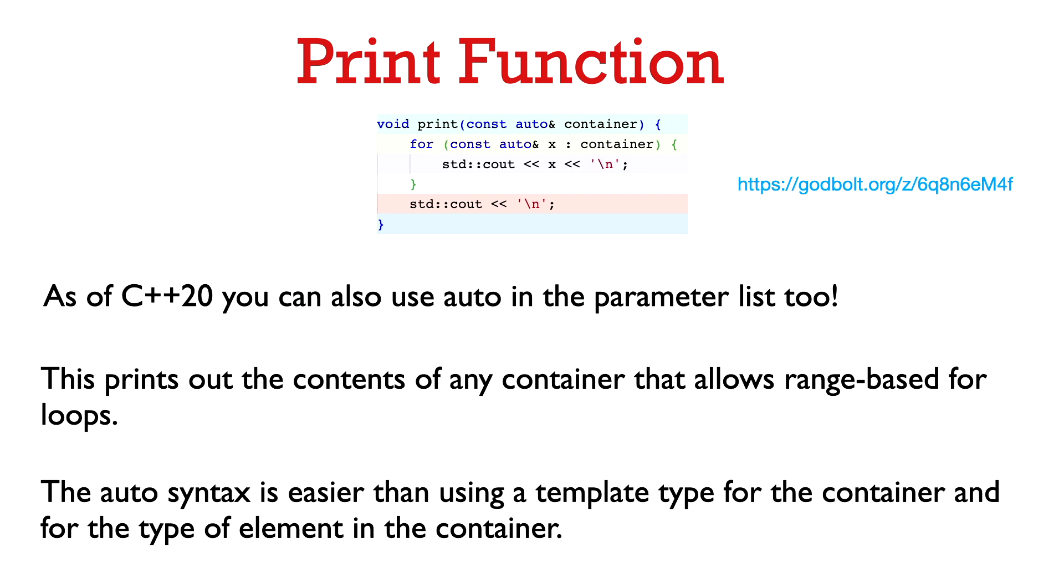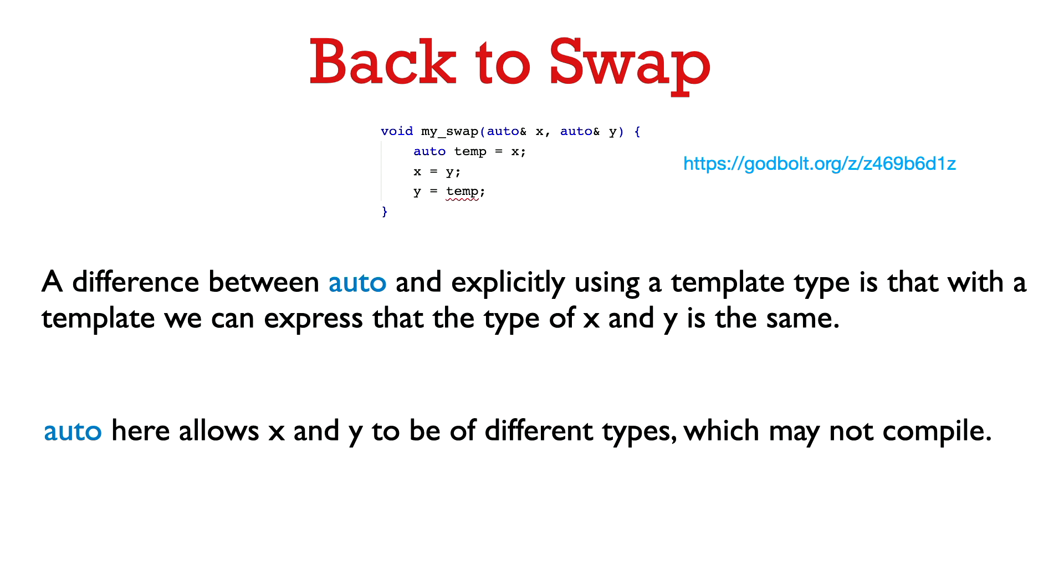So now that auto is allowed in parameter lists, it can kind of take the place of using templates and functions in a lot of instances. But let me highlight one difference between explicitly using a template versus using auto. And that's basically when you explicitly use a template, then you have something to call the type T that you're referring to. And this basically can allow you to enforce that certain types are the same. So let's look at this example of a swap function where now I just say I'm using auto to deduce the types of both X and Y.